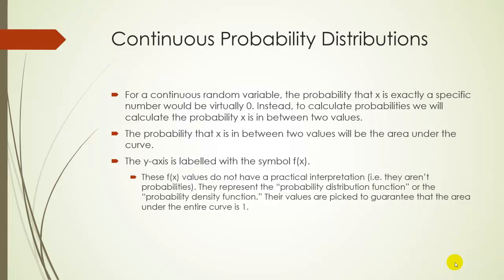Quick notes on probability distributions. For a continuous random variable, the probability that x is exactly some specific number is going to be virtually zero. In other words, if x can vary any number between 0 and 100, even decimals, the probability that you find someone exactly at 32.168 is going to be virtually zero. So instead of calculating the probability of x being exactly a number, we calculate the probability that x is between two different values. That's the only way it works.